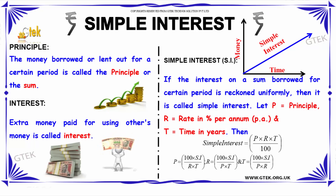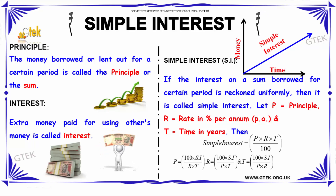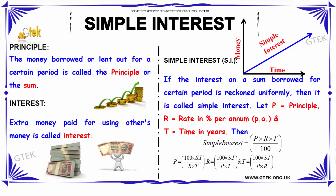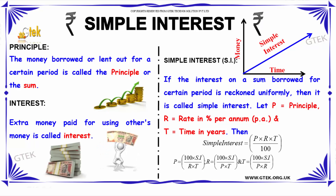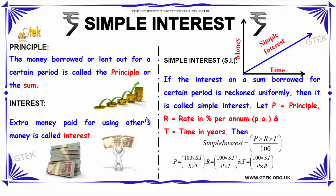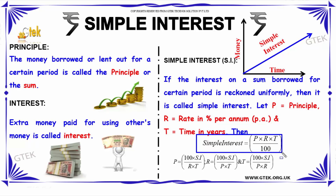Let P be the principal, R be the rate in percentage per annum, and T be the time in years. Then the simple interest is given by: SI = P × R × T / 100.